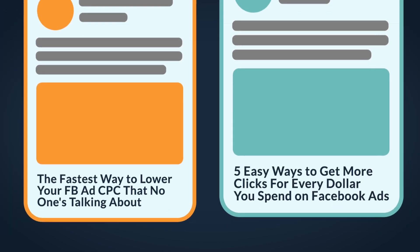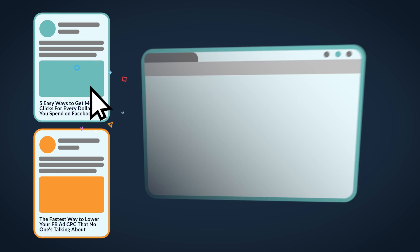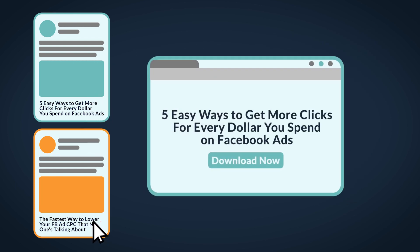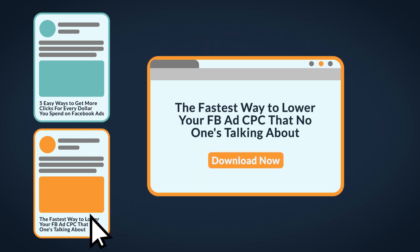A good use case for this would be a Facebook ad. Let's say you're testing different Facebook ads with different headlines — you can use Google Optimize to set it up so that people see a different headline on the landing page depending on which ad they clicked. So the landing page always has a headline that matches the Facebook ad that a person clicks. That is actually a great way to improve your conversion rates from your Facebook ad traffic, and that's just one example of how you can use this personalization tool.